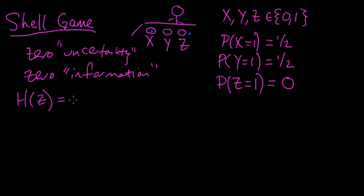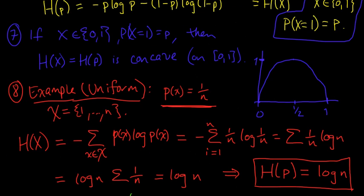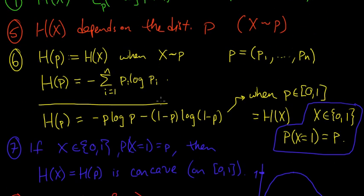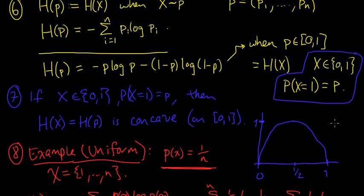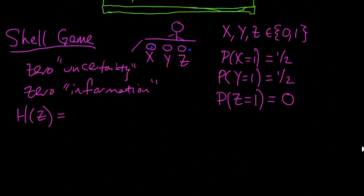Remember the formula. Entropy of Z. Well, in this case, Z is a Bernoulli random variable. And if you remember from our, we already calculated it above here. If you remember from this formula right here, this was the entropy of a Bernoulli random variable. And in fact, we drew the graph so we don't even have to compute it. So we know that when P equals zero, which it is in this case, then the entropy is zero. So right away, we know that the entropy of Z is zero.